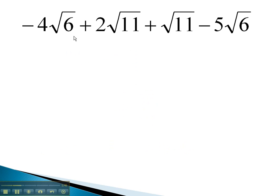In this problem, the first term has a square root of 6 on it. Notice the last term also has a square root of 6 on it. We can combine those like radicals. Negative 4 and negative 5 is negative 9 of these root 6's.